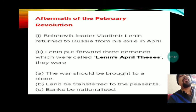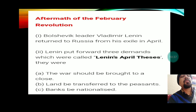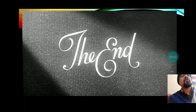After the February Revolution, the country was ruled by the provisional government consisting of workers, soldiers, and members of the Duma. Bolshevik leader Vladimir Lenin returned to Russia from exile in Europe in April. Lenin put forward three demands called the Lenin April Theses: that the war should be brought to a close end, that land be transferred to the peasants, and that banks should be nationalized. Lenin made these demands of the provisional government that was then in power.